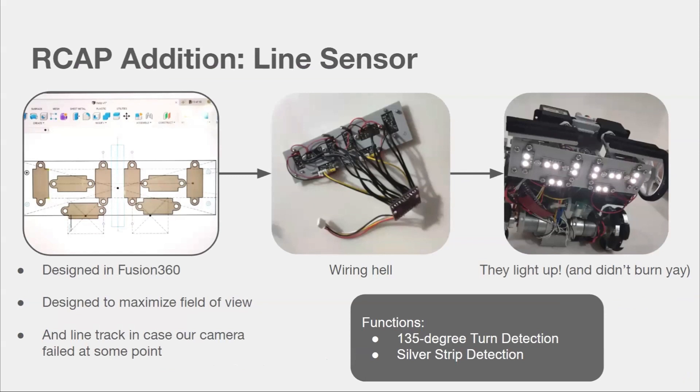For our line sensor, we didn't have much time, so we decided to design a 2D plate to hold the sensors in fusion. As you can see, the sensors are spread to the edge of the robot to maximize its field of view, and we also have some sensors at the back to detect green squares in case our camera fails.